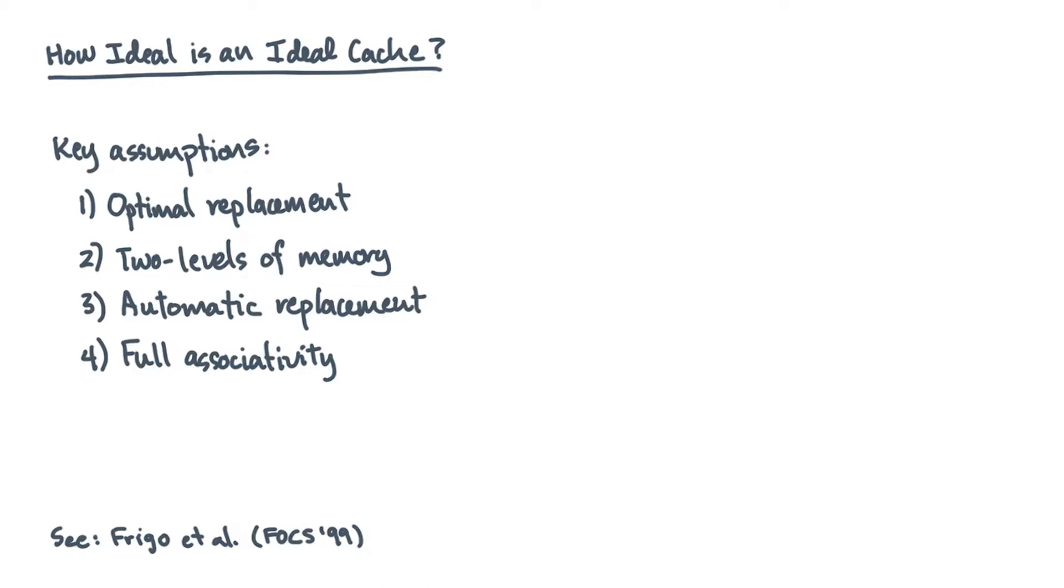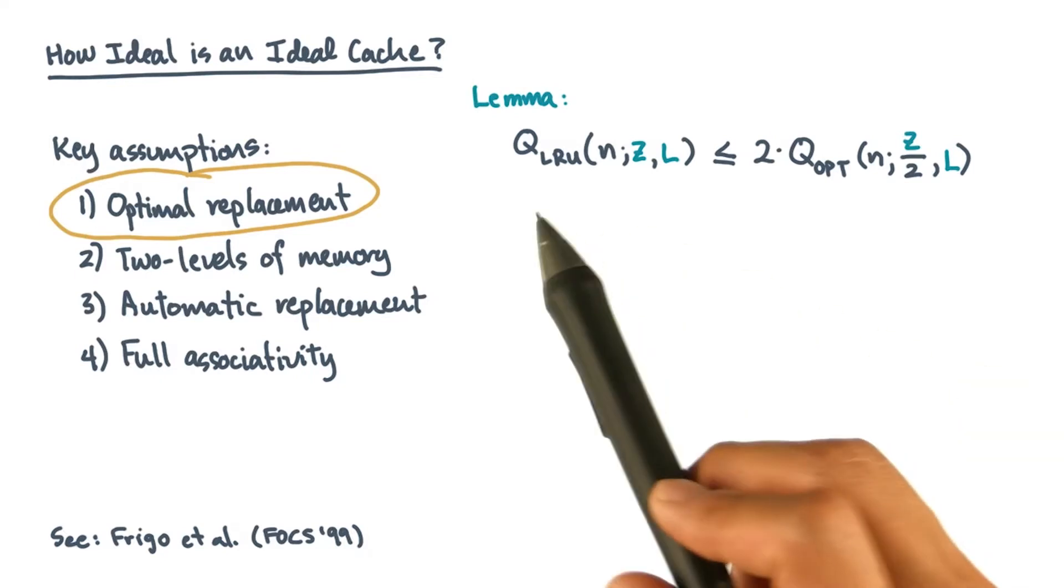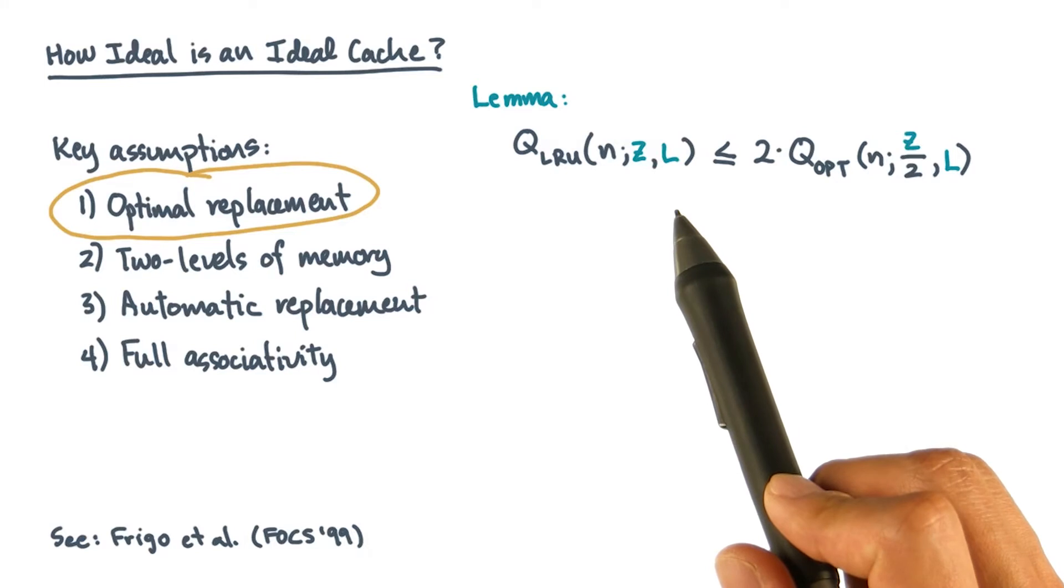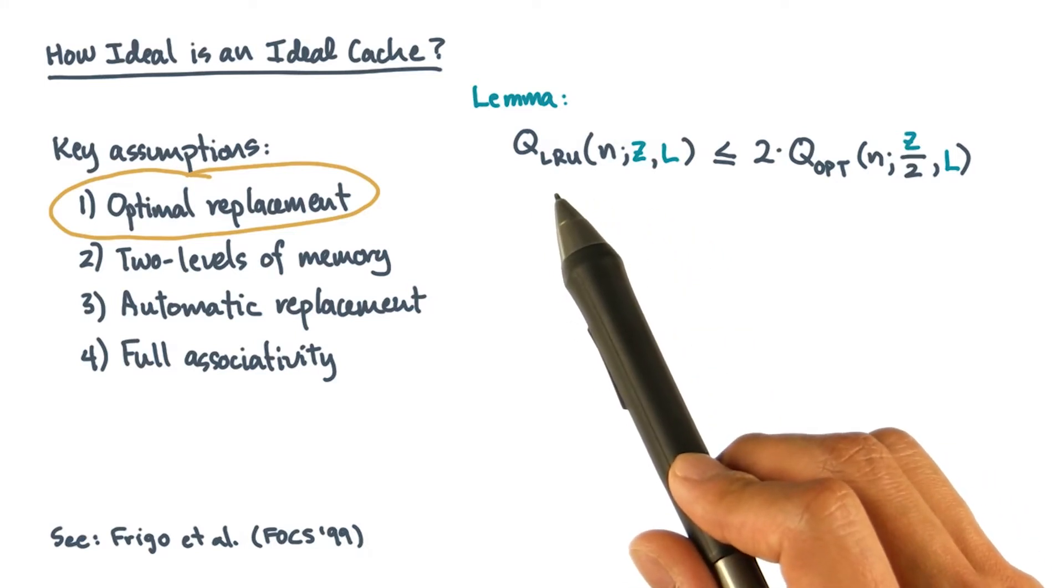The first fact is about the assumption of optimal replacement. It's a lemma, and here's what it says. Suppose you take your algorithm, and you count the number of cache misses it incurs on a machine with an LRU replacement policy.